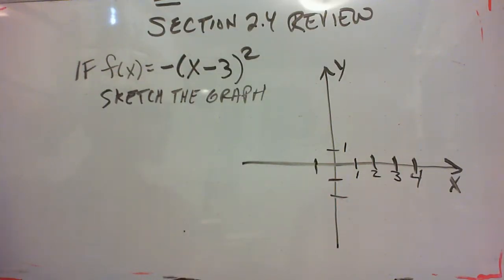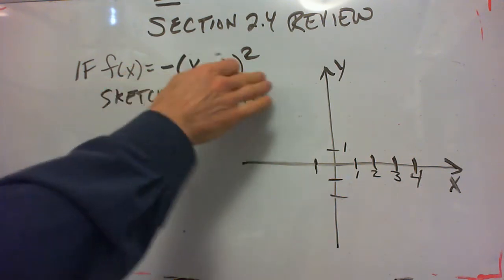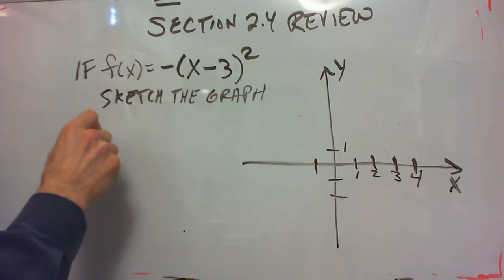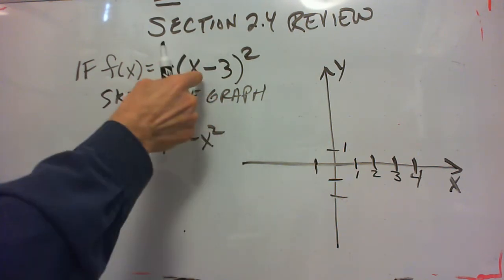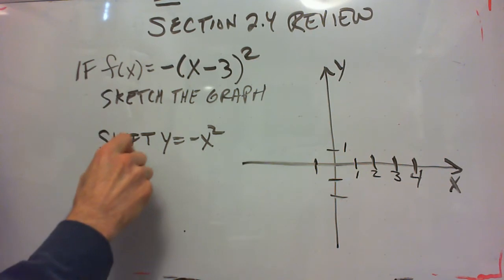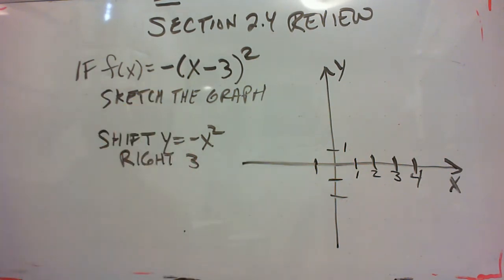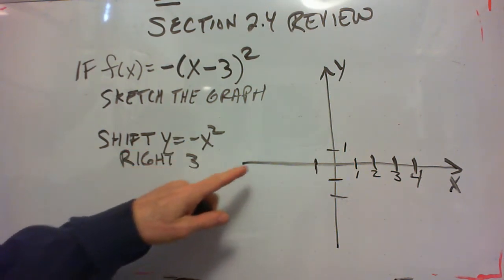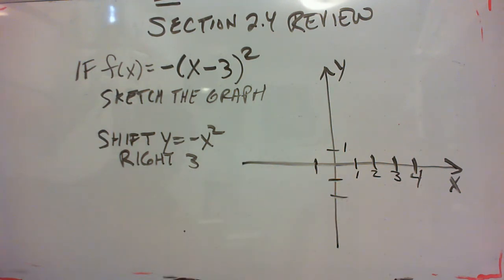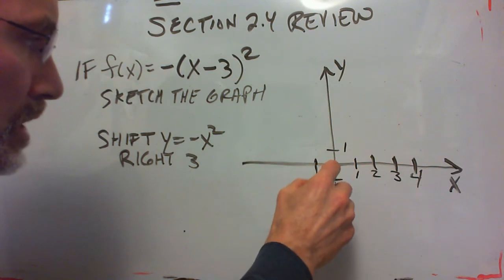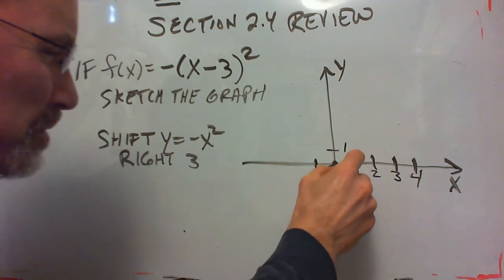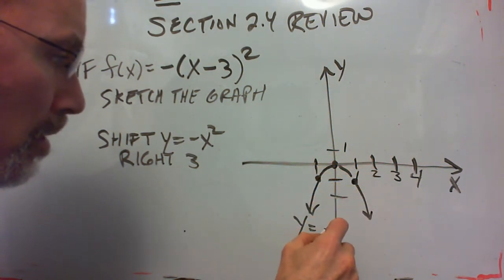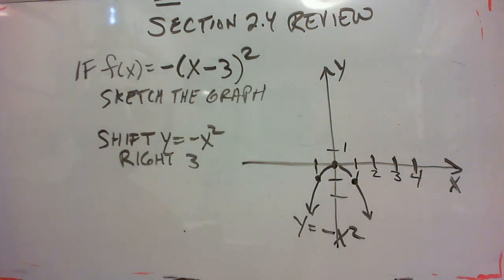So what we have here is a shift of y equals negative x squared. And replacing x with x minus 3 shifts it right 3. Now if you remember from section 2.5, negative x squared is the parabola that faces down instead of up. And it has these three points: 0, 0, 1, negative 1, and negative 1, negative 1. So it's this upside down parabola. Looks like that.